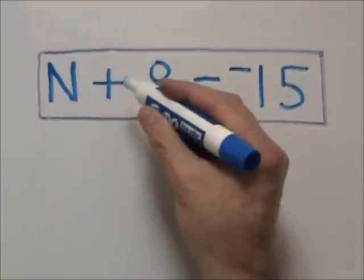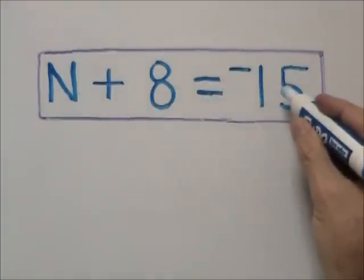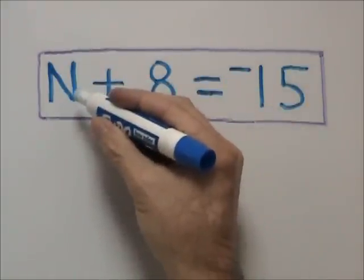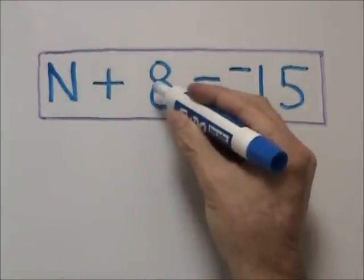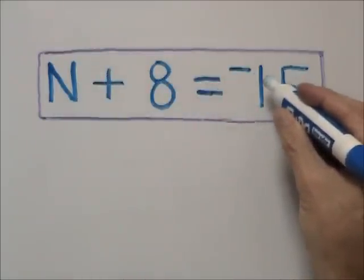Our problem is n plus 8 equals negative 15. n is our variable, which stands for any number. Once we find n and add it to 8, we will get negative 15.